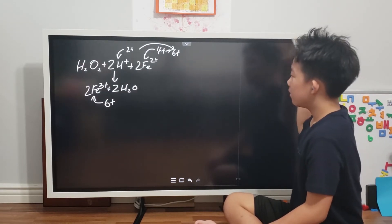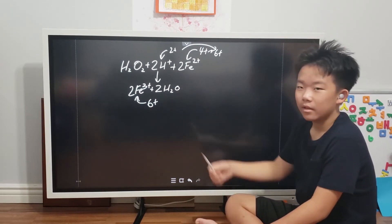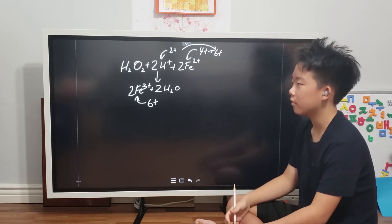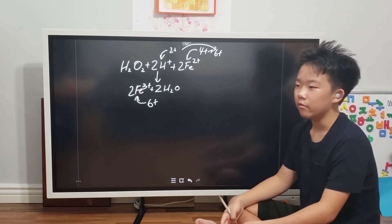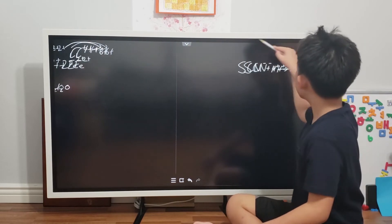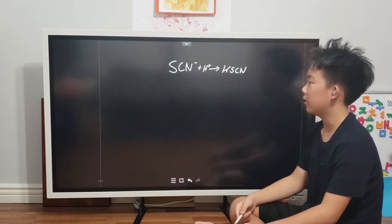Then, the iron-3 that is now produced will form the iron-3 thiocyanate. And now, this is the reaction we have to be careful on.